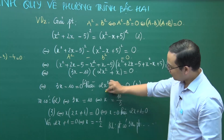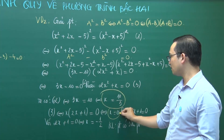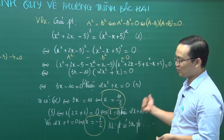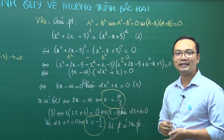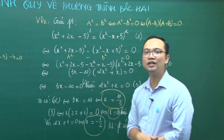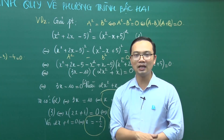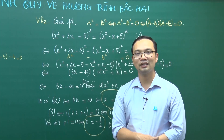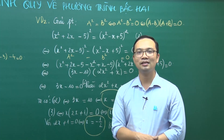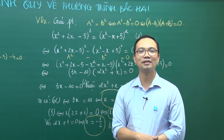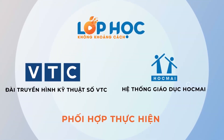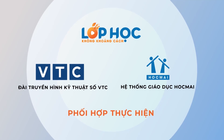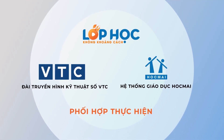Kết luận phương trình có 3 nghiệm phân biệt: x = 10/3, x = 0 và x = -1/2. Như vậy bài học ngày hôm nay đã giới thiệu một số dạng phương trình đưa về phương trình bậc 2: phương trình trùng phương, phương trình có ẩn dưới mẫu thức và phương trình tích. Xin chào tạm biệt và hẹn gặp lại trong bài học sau.